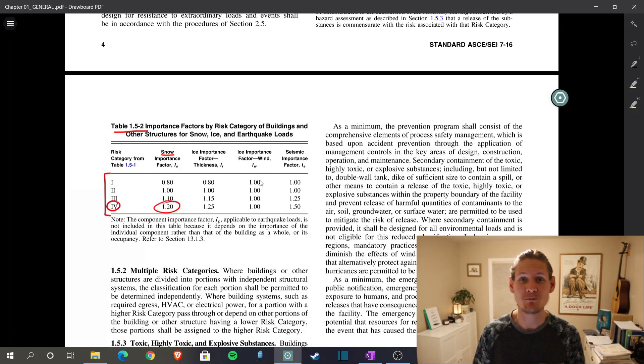Something like a fire station or a police station or a hospital where they need to be operational post catastrophic event, which means that they fall under a risk category of four. So with that information, you have four. And for snow, importance factor i sub s, that means we need to use a factor of 1.20. That's all we needed from chapter one. Now for the remainder of this problem, we're going to jump over to chapter seven, which is our snow load chapter.